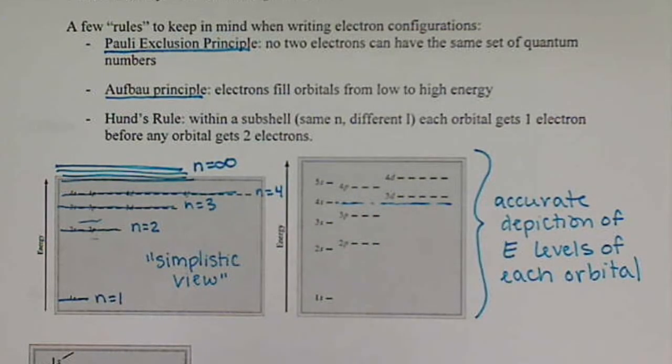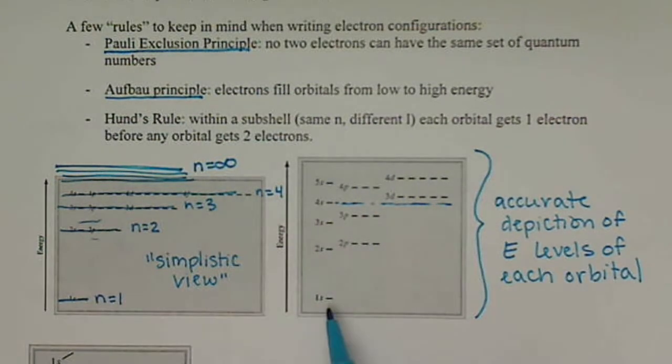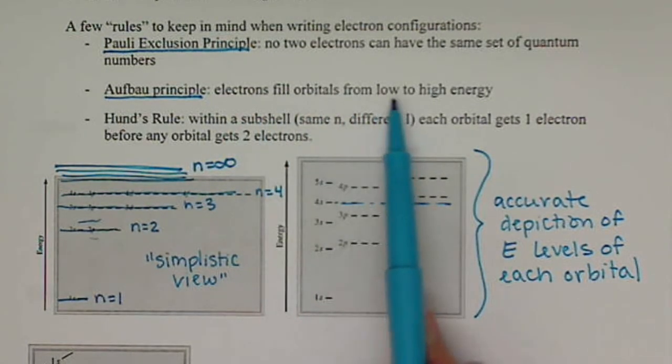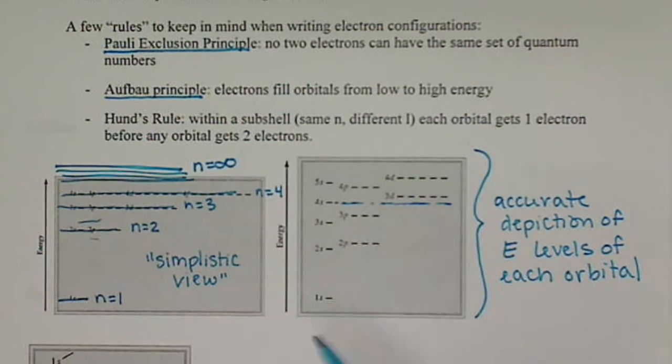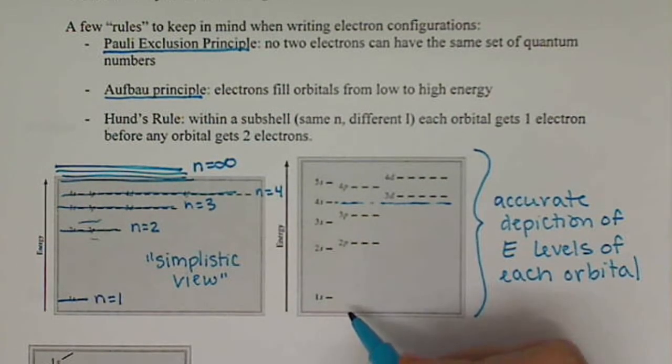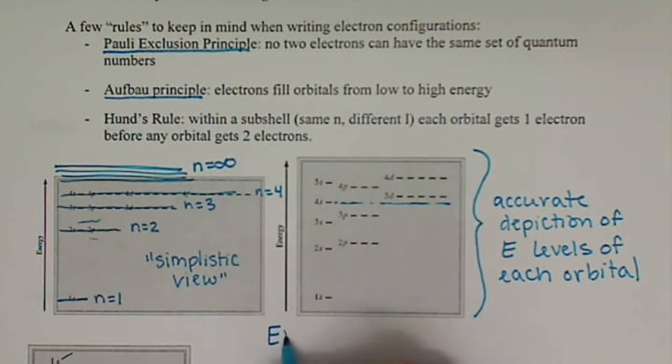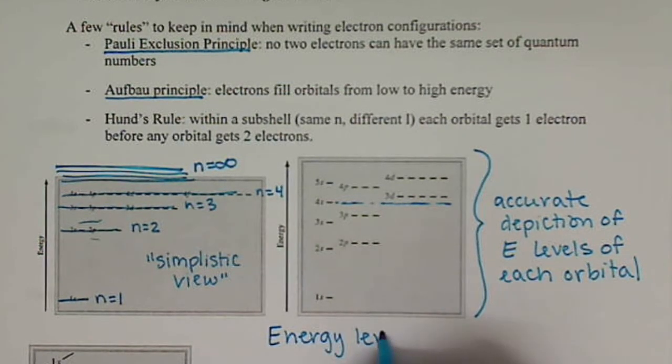Now what we want to focus on right now is we want to look at assigning electrons and filling these orbitals from low to high energy. So in our electron energy level diagrams, which that's what this is, so energy level diagram.